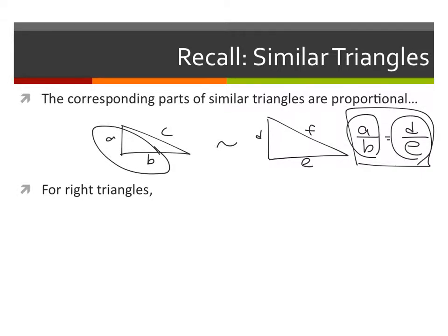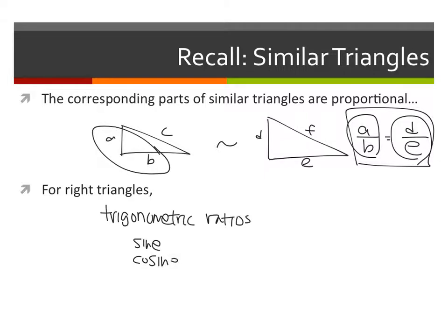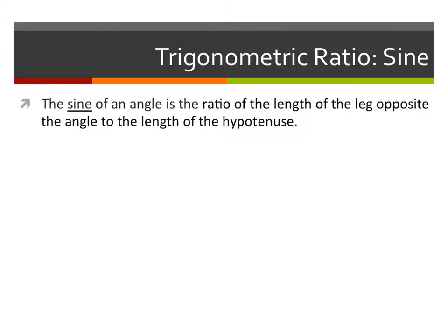For right triangles we call those trigonometric ratios. There are three different ratios we can set up: sine, cosine, and tangent. We'll talk about sine first.